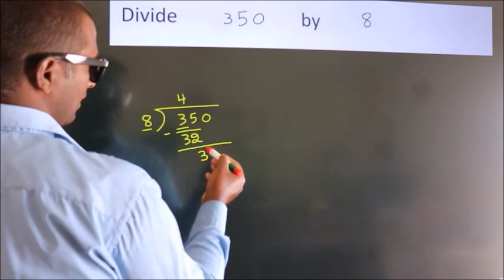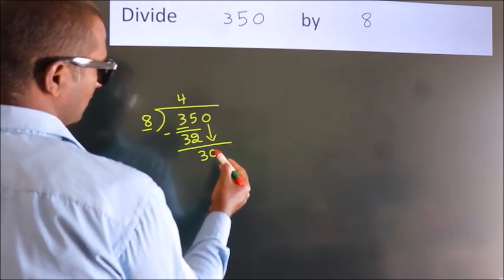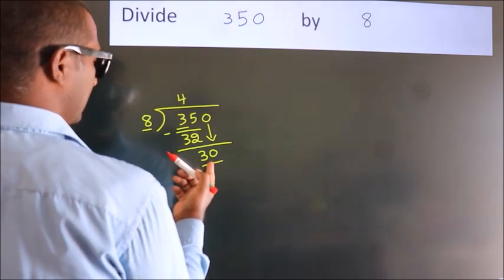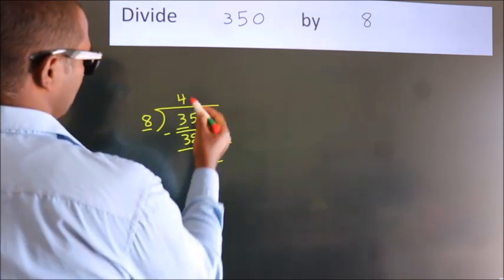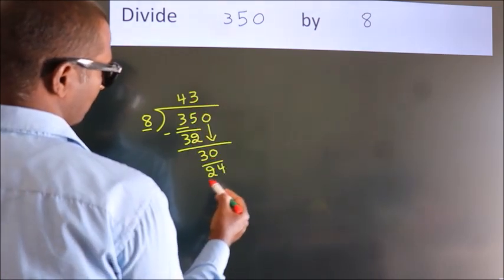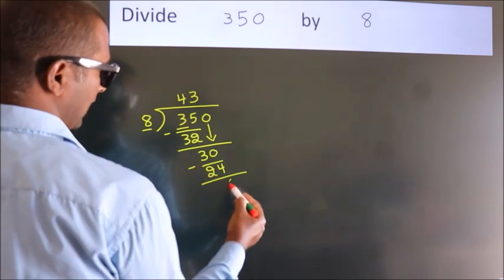After this, bring down the beside number. So, 0 down. So, 30. A number close to 30 in 8 table is 8 threes 24. Now, we subtract. We get 6.